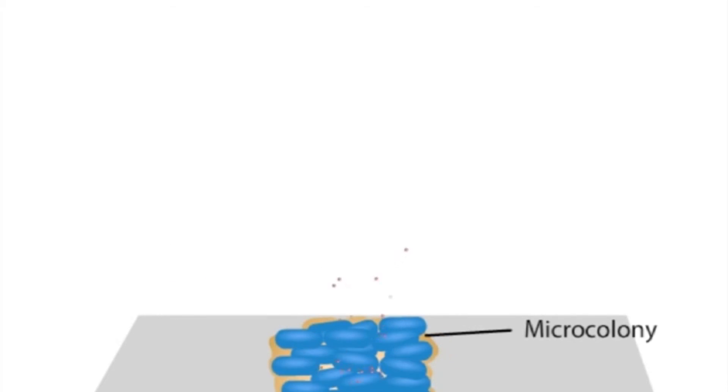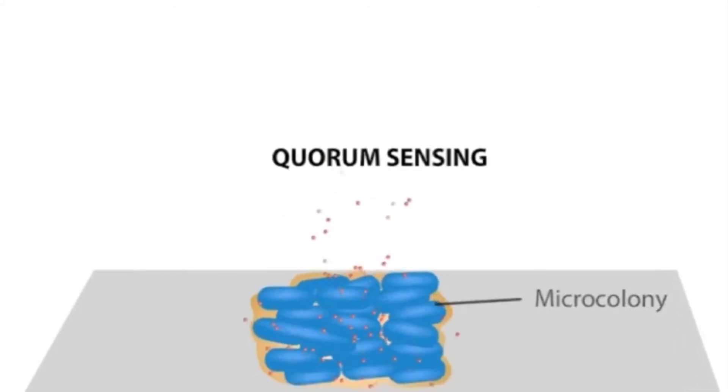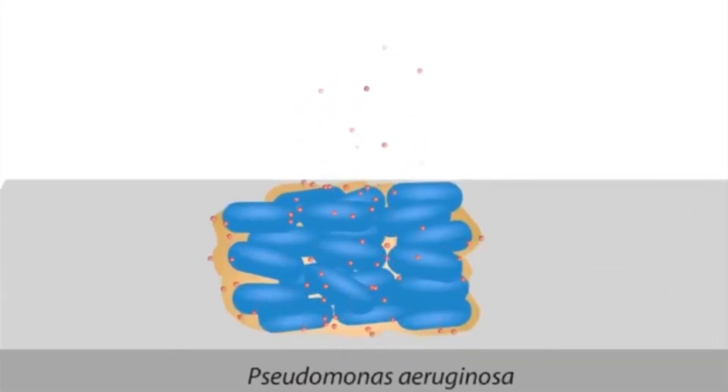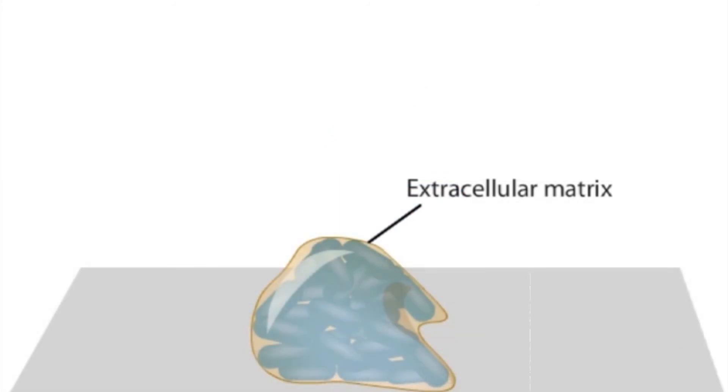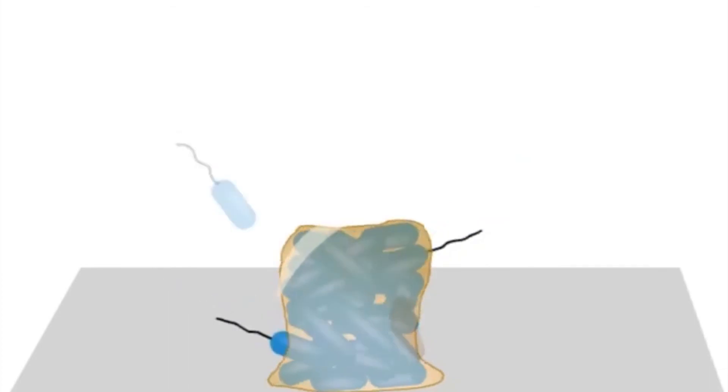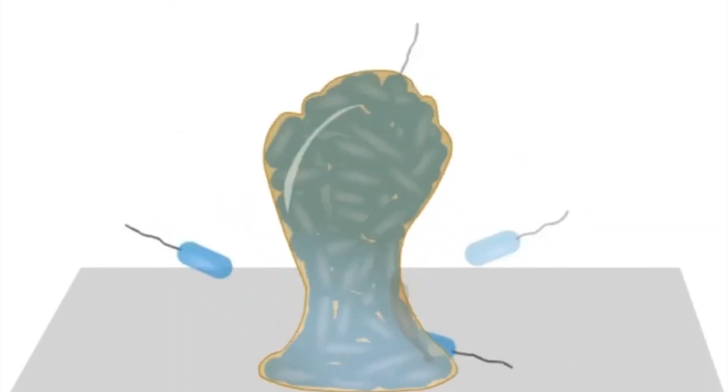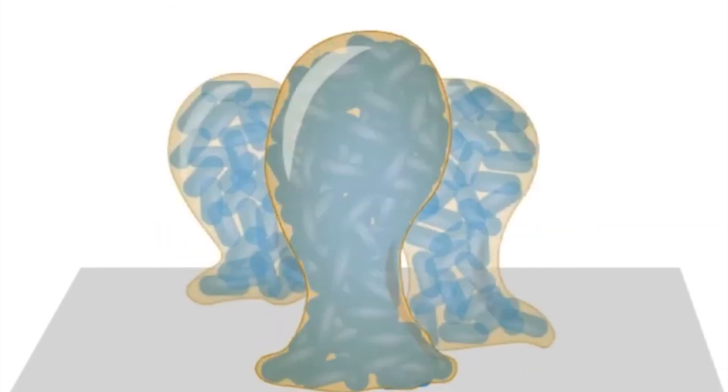Quorum sensing in Pseudomonas aeruginosa plays a role in the maturation of the biofilm into complex three-dimensional forms such as columns and streamers, forming channels through which nutrients flow. The cells in a biofilm chemically talk to each other in order to build microcolonies.